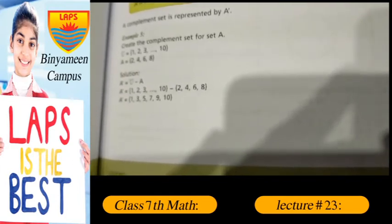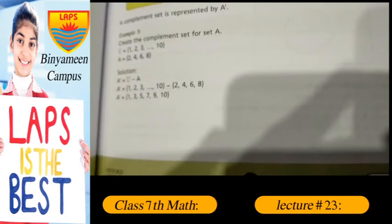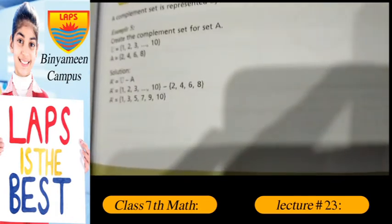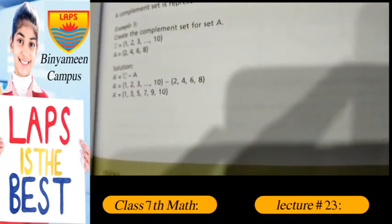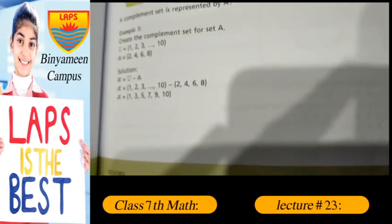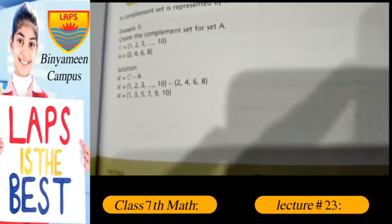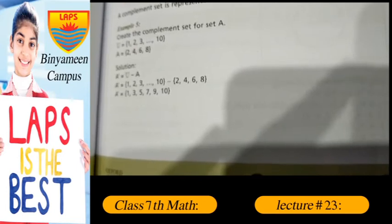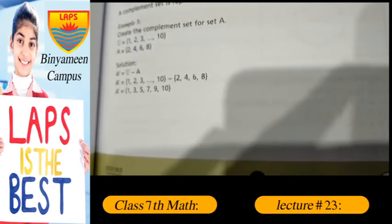Write the set of U: 1, 2, 3, 4, 5, 6, 7, and 10, then difference between A: 2, 4, 6, 8. The difference between U and A, the complement of set A is 1, 3, 5, 7, 9, 10.